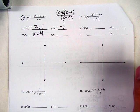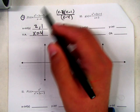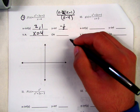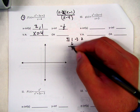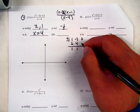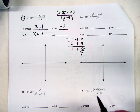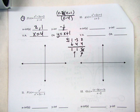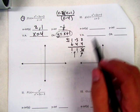For the oblique asymptote, nothing canceled, so we do synthetic division. Put 4 in the box, coefficients 1, negative 3, 2. Bring down the 1; multiply: 1 times 4 is 4; add: negative 3 plus 4 is 1; multiply: 1 times 4 is 4; add: 2 plus 4 is 6 — that's the remainder. We don't care about the remainder. The quotient is x plus 1, so the oblique asymptote is y equals x plus 1.